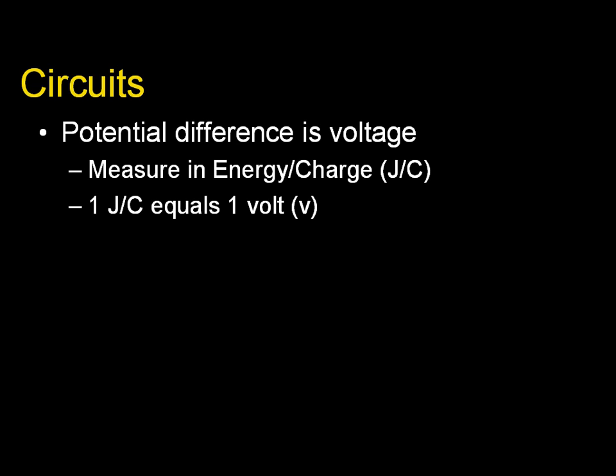Voltage is something that we're very accustomed to. So a 9 volt battery will give out 9 joules of energy for every coulomb.